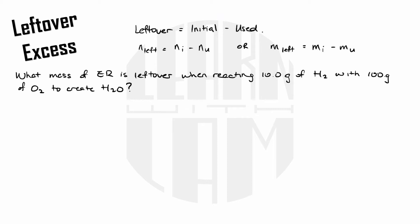As with any stoichiometry problem we need to start with a balanced chemical equation. And from there I'm going to list my givens: 10.0 grams of hydrogen and a hundred grams of oxygen. Now I'm looking for the leftover mass of my excess reactant but I'm not sure which reactant is excess yet so let's figure that out first.